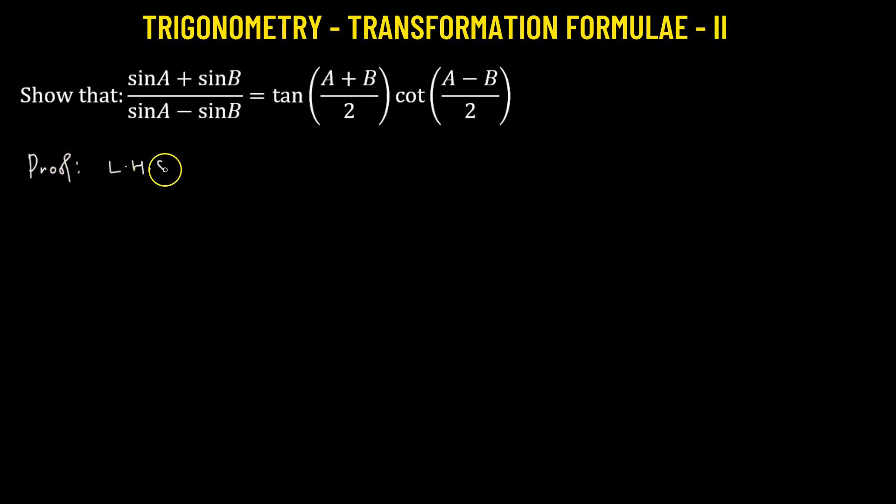On the left-hand side, we have in the numerator, the sum of two sine functions. So we have sine a plus sine b. And in the denominator, we see that we have a difference of sine functions. So we have sine a minus sine b.